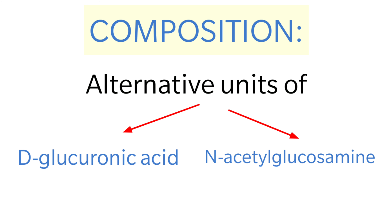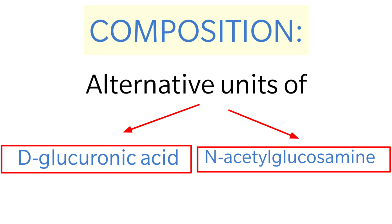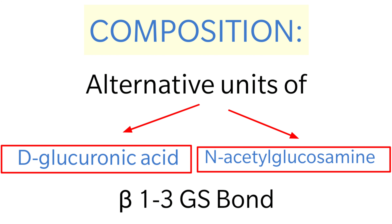These two sugars — D-glucuronic acid and N-acetyl glucosamine — are connected to each other by a beta 1-3 glycosidic bond.